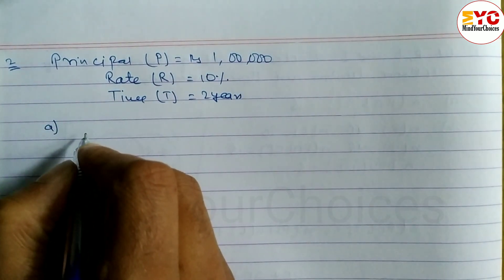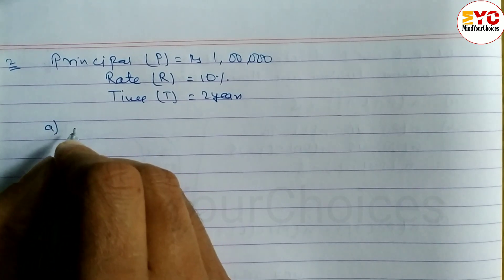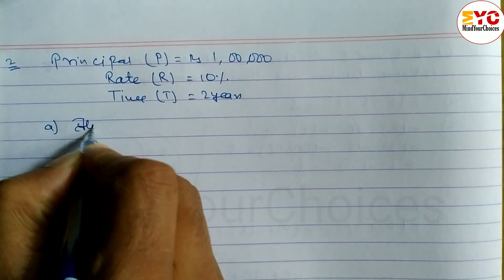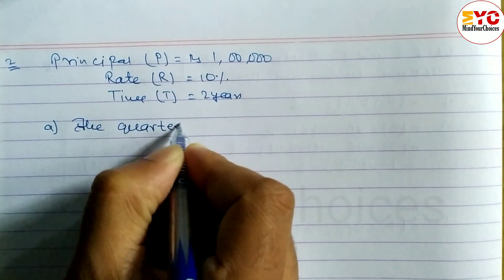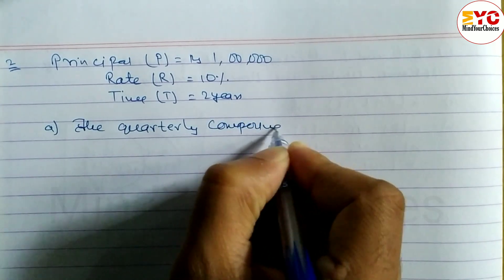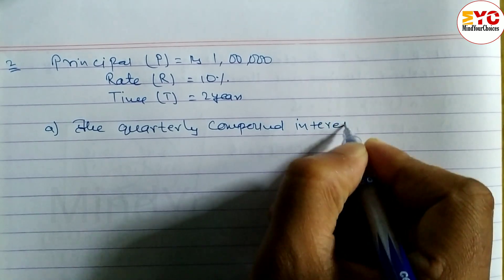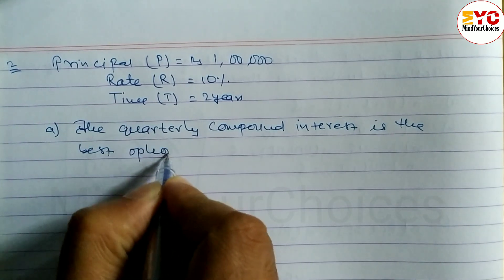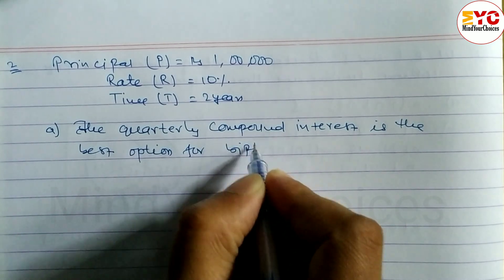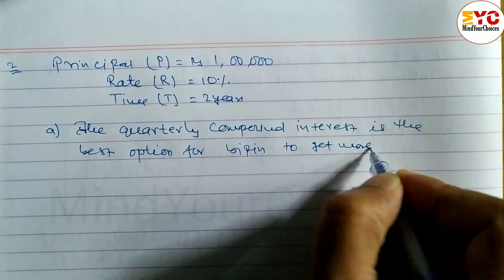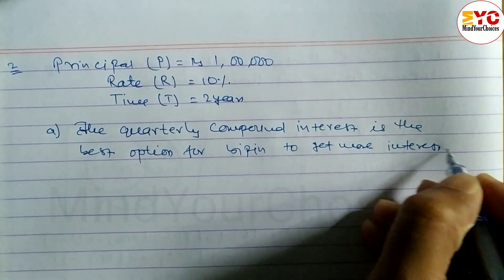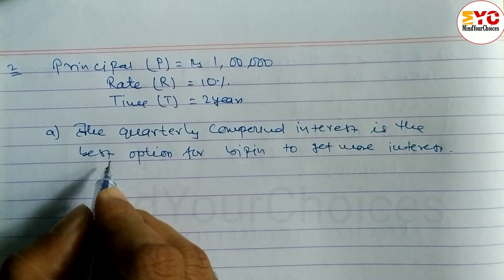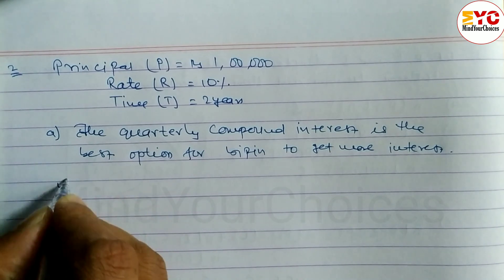Among the three alternatives — yearly, half-yearly, or quarterly — which is best for Bipin to earn more interest? The quarterly compound interest is the best option for Bipin to get more interest, because he earns interest on interest.